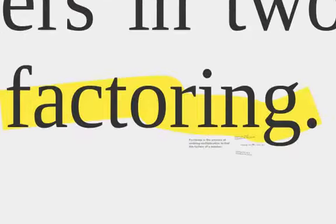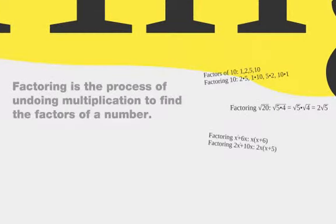Now the other thing we're going to do is called factoring. Factoring is the process of undoing multiplication to find the factors of a number. So for example, factors of 10, 1, 2, 5, and 10, factoring it would be 2 times 5, 1 times 10, 5 times 2, 10 times 1.